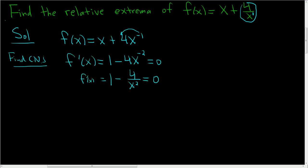Now notice the first derivative is undefined at 0. So 0 could be a critical number, but it's not because you can't plug it back into the original function, right? 0 is not in the domain. Now that that is out of the way, let's solve this equation. So this is 1 equals 4 over x squared. Multiply by x squared, you get 4. Take the square root, you end up with plus or minus 2.